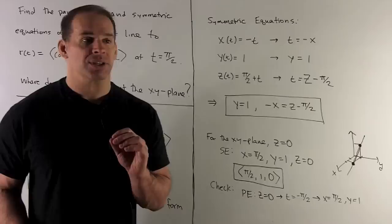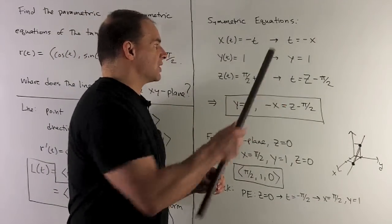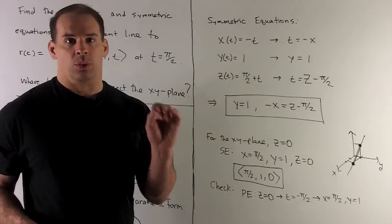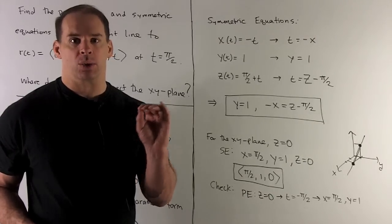So in this case, what happens? I have x = -t, so t = -x. y = 1, there's no t there, so I just leave it alone, y = 1.